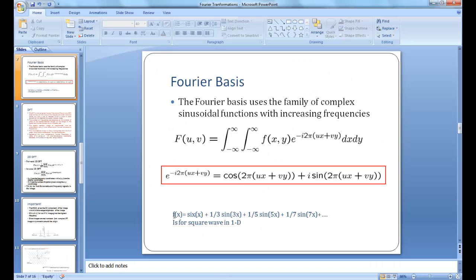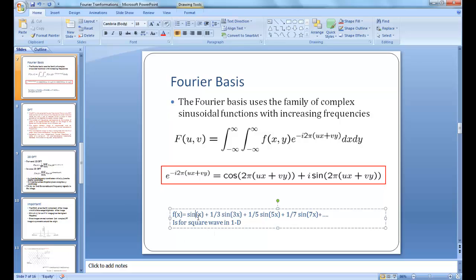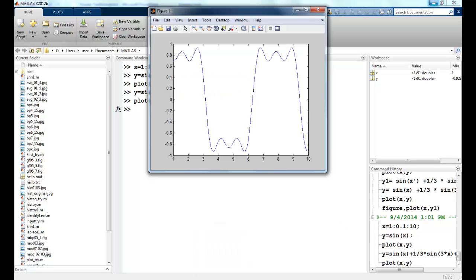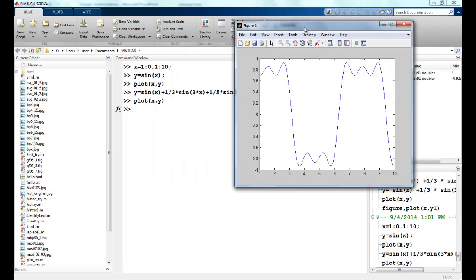So we know that a square wave is represented like this, wherein fx is equal to sine of x, plus 1 by 3 sine of 3x, plus 1 by 5 sine of 5x, and so on. So we try to implement this and see the results in MATLAB. So since we are operating on vectors, we can just simply say 1 by 3 sine of 3x, 1 by 5 sine of 5x. Let's plot this. So you can see it's getting close to a square wave.